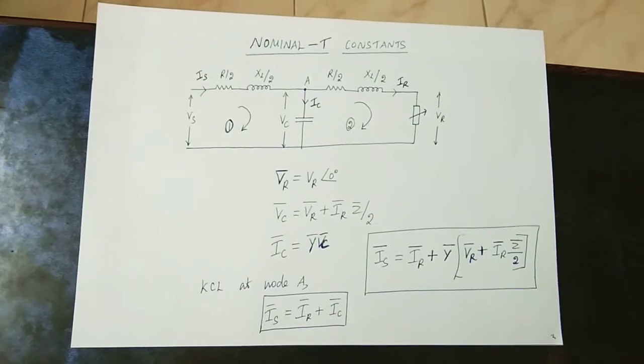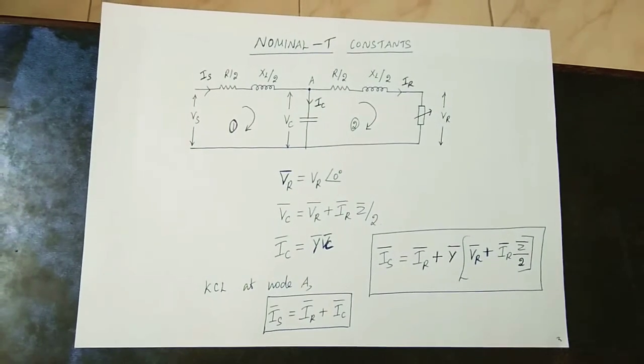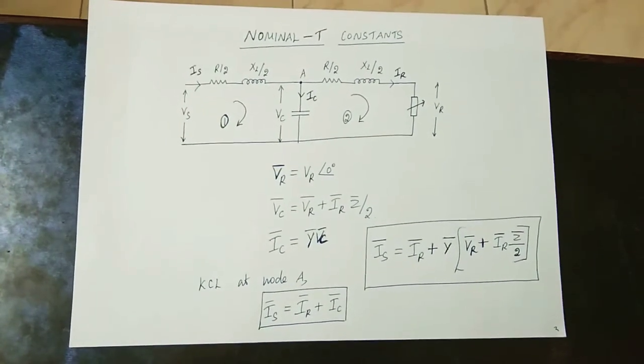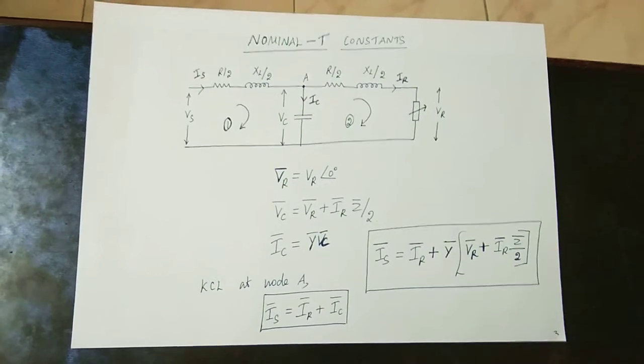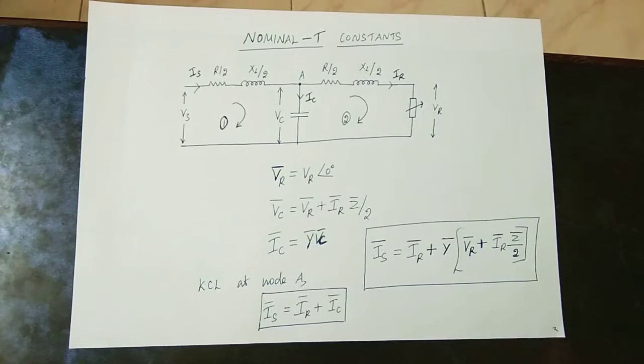In this video, ABCD are the Transmission Line Parameters. We will see the same type of Transmission Line Parameters — basically, the same approach.